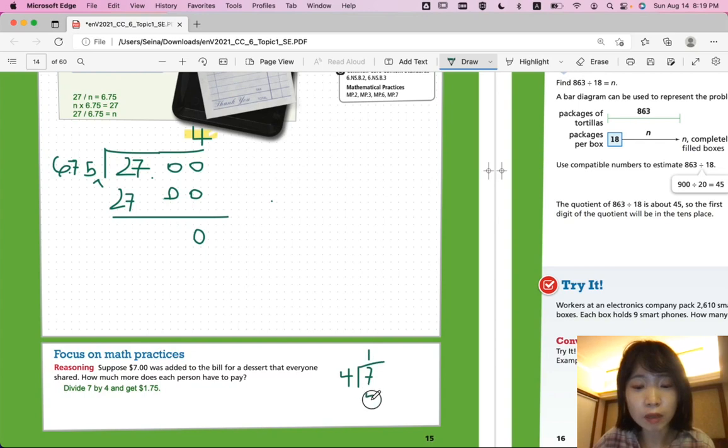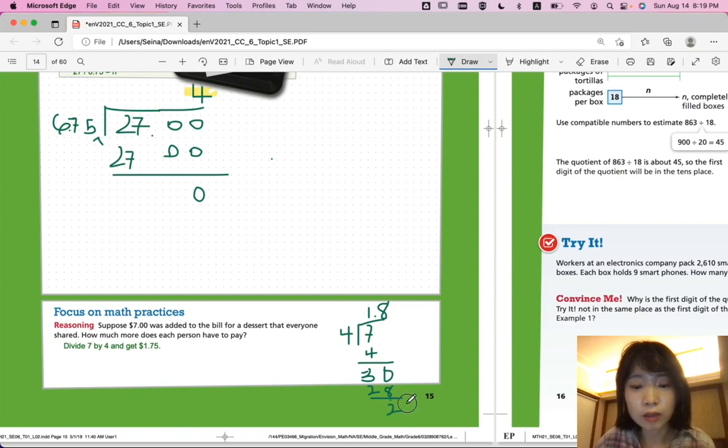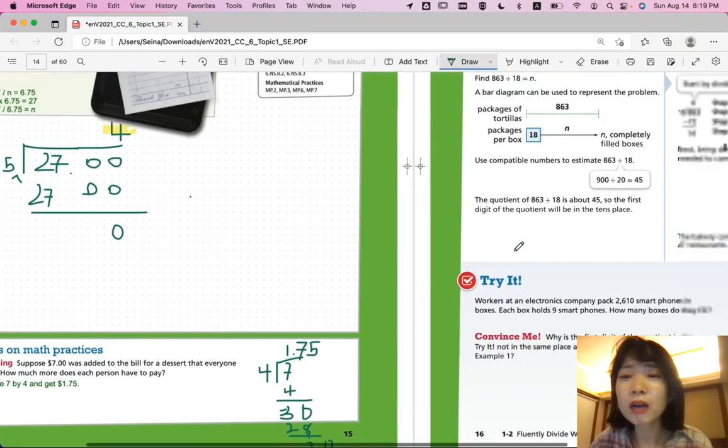you would say 4 goes into 7 one time. But then, you have a remainder of 3. So, you're going to put a decimal place here. And it's a 0. And 4 goes into 30 eight times. 8 times 4 is 28. And then, you get a remainder of 2. And the annex is 0. And you know 4 goes into 20 exactly five times. And you can stop there. Oh, I'm so sorry. Not 8. It's 7. 7 times 4 is 28. I was mentally thinking about it. All right. Let's go to the next page.